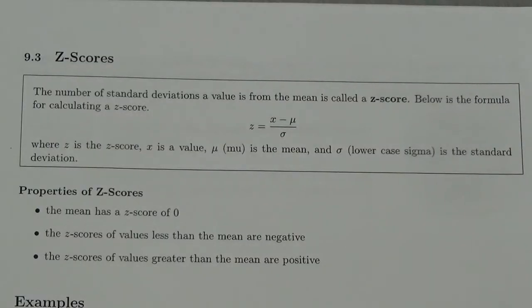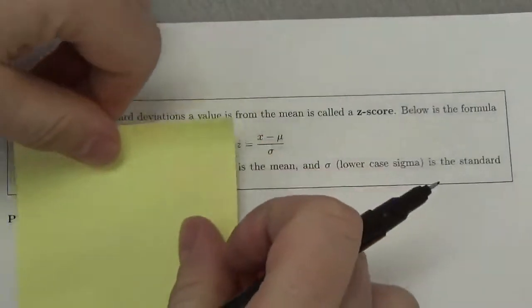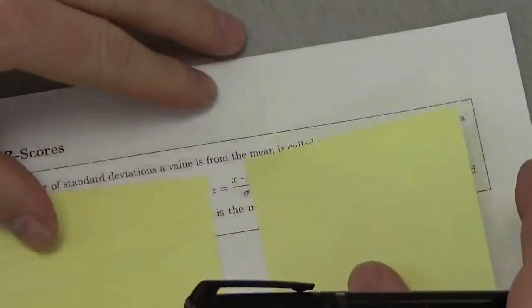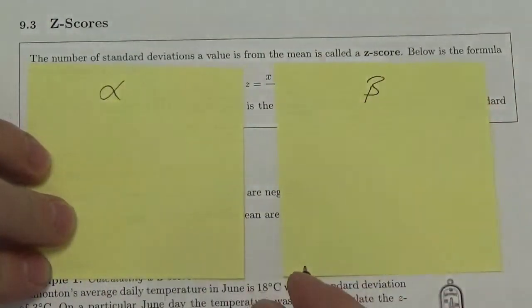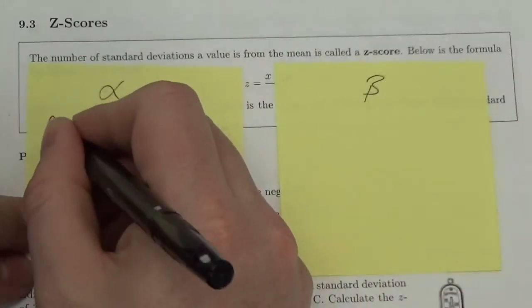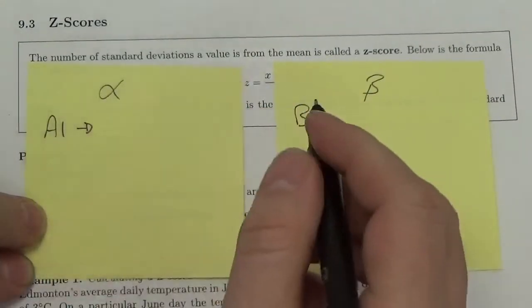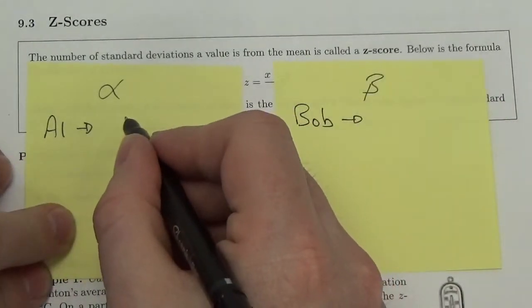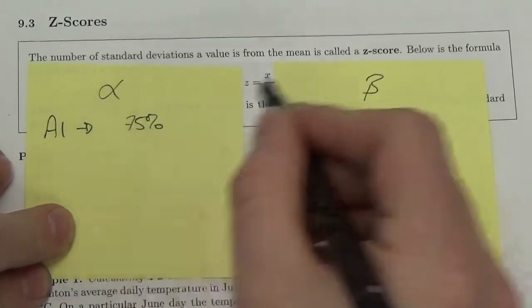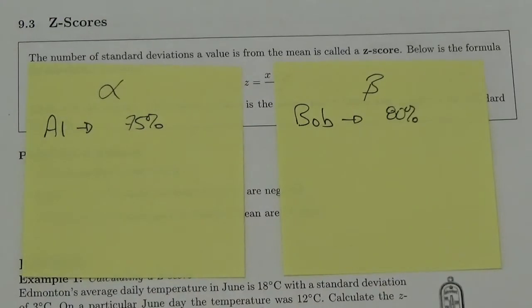In this video, we're going to introduce something called a z-score. Before we get into this, I want to show you an example — a scenario to walk you through. So let's say we've got two different math classes: class alpha and class beta. We've got Al and Bob, and they both write their statistics math exam. Al gets 75% and Bob gets 80%. Who did better?